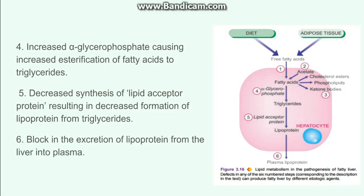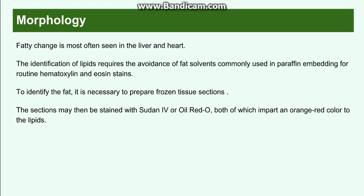Now going to the morphology. The organs involved are mostly liver, heart, and muscles. For the stains to demonstrate this fat, we should remember that routine H&E stain is not of much importance because these are fat-soluble dyes. To identify fat, therefore, we have to go for frozen sections or special stains like Sudan IV and oil red O. In H&E sections, the lipids will be washed out and we will see an empty space instead of fat.